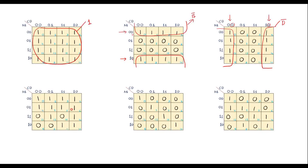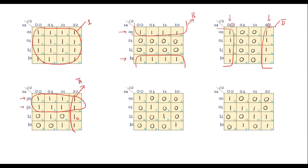In another Kmap, cells 0,1,2,3 and 4,5,6,7 all contain 1s, forming an 8-bit group. This covers two rows whose common factor is 0, corresponding to A-bar, and all four columns so column value is 1. Thus the simplified result is A-bar. Additionally, cells 2, 6, 14, 10 can form a quad instead of just a pair; the quad belongs to column 10 (C and D-bar), covering all rows, so its value is C D-bar.